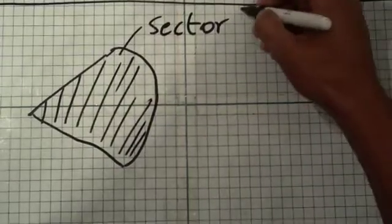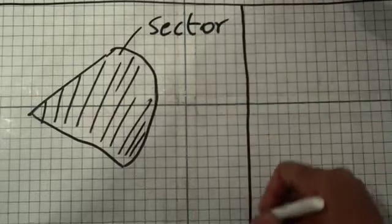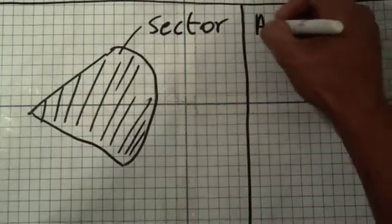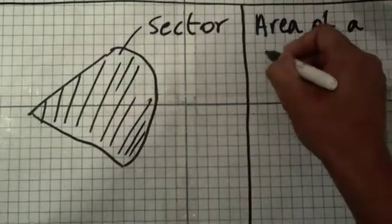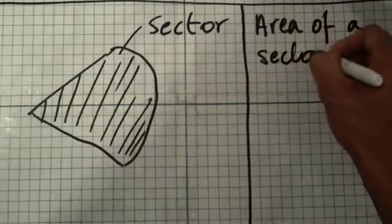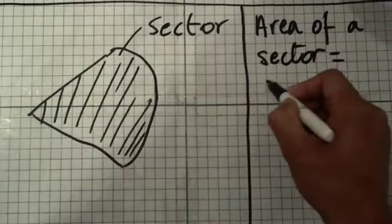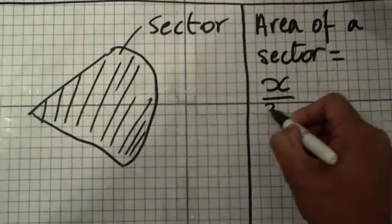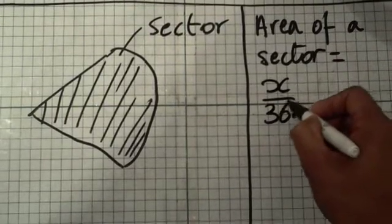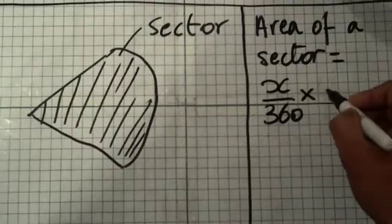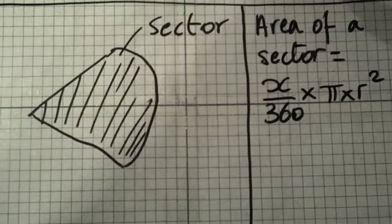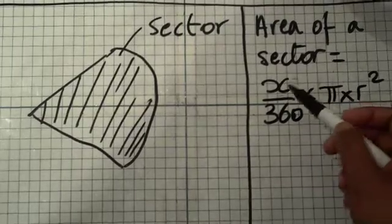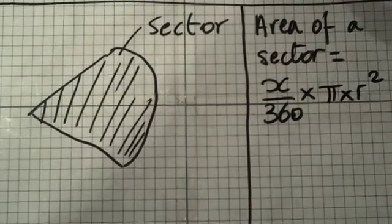The formula that you need to remember for the area of a sector is as follows: the area of a sector is equal to x over 360 times pi times r squared. Now what does the x and the r stand for? Well it's very easy.